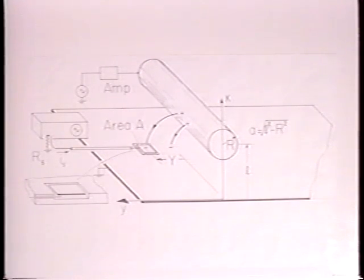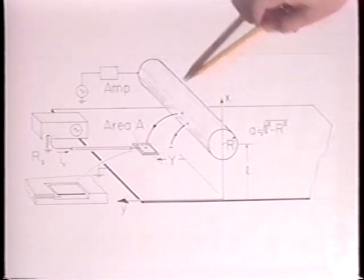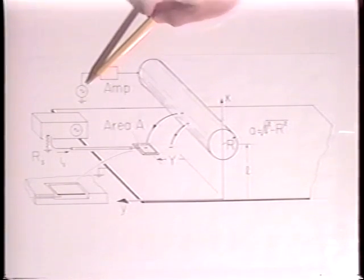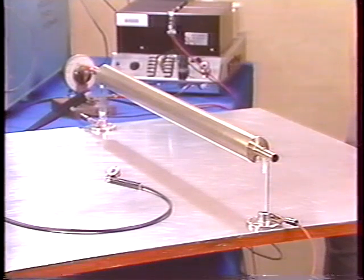This is familiar as an EQS situation where the same cylinder is insulated from the same ground plane and driven by a voltage source. Now the situation is magneto-quasi-static, MQS.